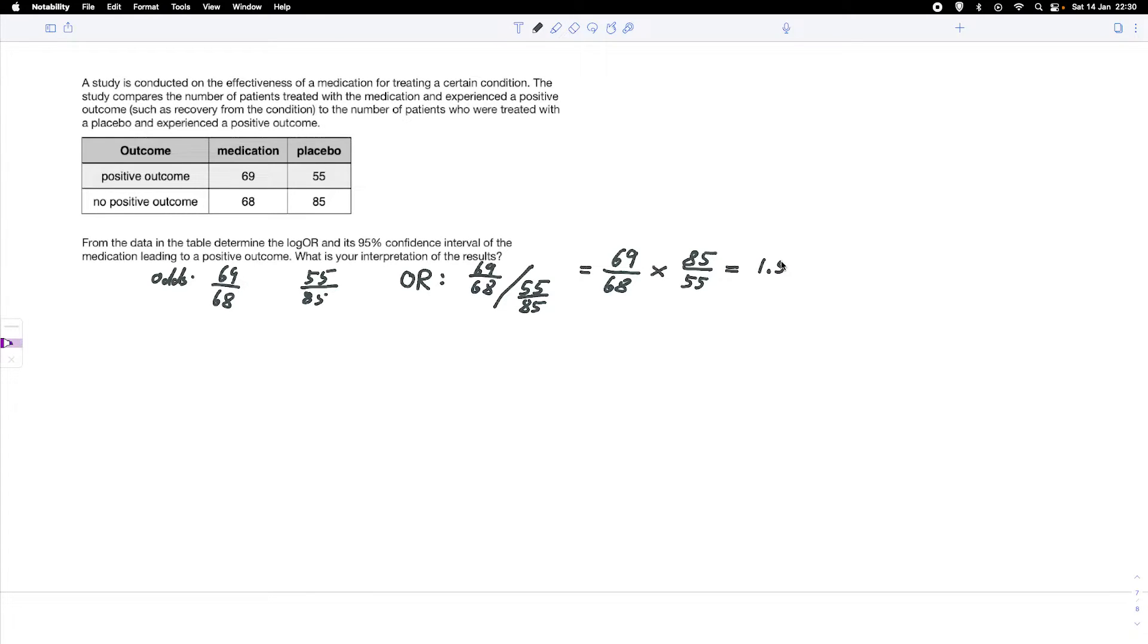Now, if we want to calculate the confidence interval, we can't do that with the odds ratio, but we can do it with the log odds ratio. The log odds ratio is simply the natural logarithm of the odds ratio, the natural logarithm of 1.57. If we put this into a calculator, we would get a log OR of 0.45.